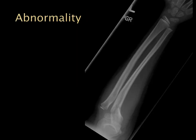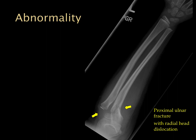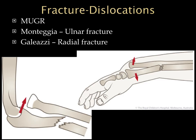For example, our eye jumps to a proximal ulnar fracture but we might miss the radial head dislocation on the same image. This is known as a Monteggia fracture — one of two classic fracture-dislocations of the forearm. Monteggia involves a fractured ulna; the other is Galeazzi where the radius is fractured. There is a mnemonic to remember these, but what's more important is recognizing both injuries.